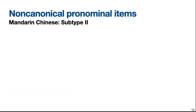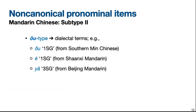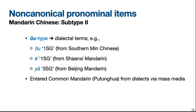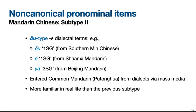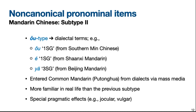We see a matching subtype in Chinese, which are dialectal terms. Some examples include O, E, and yā. As we can see from the slide, each of them come from a specific variety of Chinese. These terms enter common Mandarin from dialects via mass media. They're more familiar in real life than the previous subtype, but similarly they encode special pragmatic effects. For example, O and E are used in a jocular way, but yā can come across as quite vulgar.